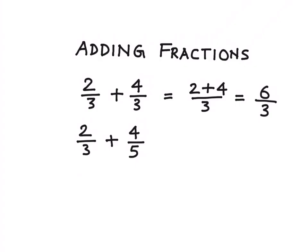So let's pick up 2 by 3 first. I'll convert 2 by 3 into its equivalent fraction. So how do you do that? In order to convert a fraction into its equivalent fraction, we need to multiply both the numerator and denominator by the same number.